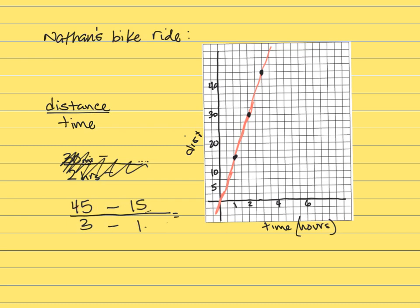45 minus 15 is 30. 3 minus 1 is 2. And reduce that fraction. Divide by 2 to both. You're going to get 15 to 1. You're still going to get the same unit rate.